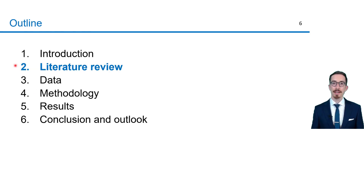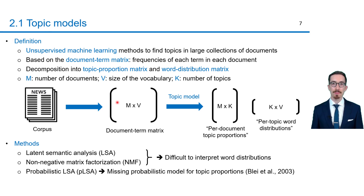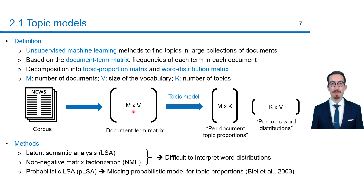To reach these objectives, I first reviewed the literature. I found out that methods to identify topics in large collections of documents are called topic models. These models are unsupervised machine learning methods based on the document term matrix. This matrix contains the frequencies of each term in each document. It has the dimensions M times V, where M is the number of documents and V the number of different terms in the corpus.